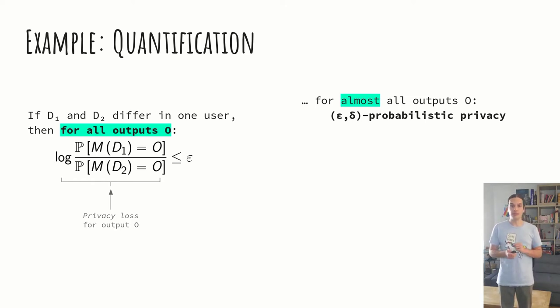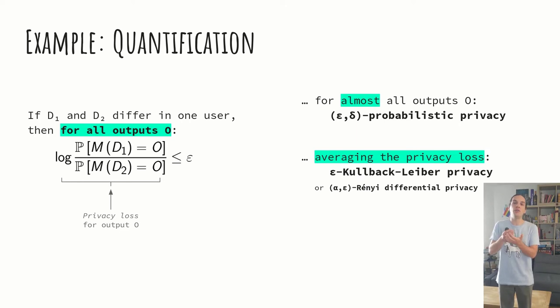Or, instead of doing that, because even arbitrarily bad events even with small probability are scary, you could do what insurance companies do, and you could weigh the risk of each possible output according to its probability, essentially averaging the privacy loss. It's not super obvious, but this is actually what alpha-epsilon-Rényi differential privacy is doing, if you have heard of that thing.